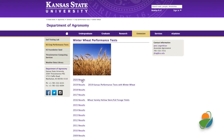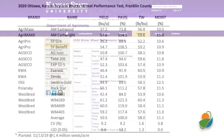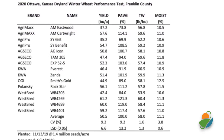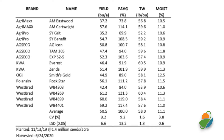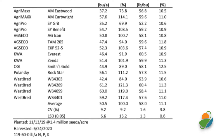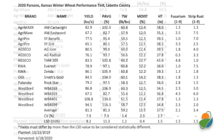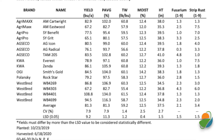Regardless of whether you intend to plant one variety or several on your farm, it is important to start out with a list of several good candidate varieties. The final product of interest is grain yield, and therefore it's crucial to select varieties that have shown consistent performance and excellent yield record in your region.